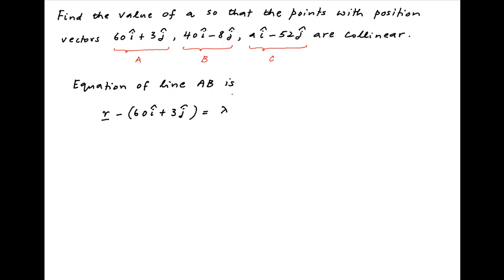is equal to a scalar lambda times in brackets the position vector of point B which is 40i minus 8j minus the position vector of point A which is 60i plus 3j.